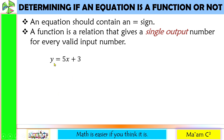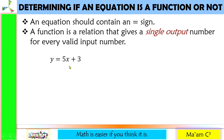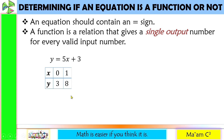Let's have an example. You will notice we have an equal sign, and since this is a relation, we should have two variables — the independent and dependent variables, x and y. Let us try substituting 0: 5 times 0 is 0, and 0 plus 3 is 3, so if x is 0, y is 3. Let us try positive 1: 5 times 1 is 5, and 5 plus 3 is 8, so if x is 1, y is 8. Let us try negative 1: 5 times negative 1 is negative 5, and negative 5 plus 3 is negative 2. Notice that for every unique value of x, you have a single output for y. Therefore, this equation is a function.